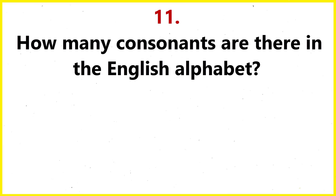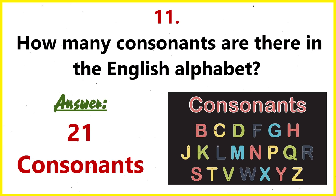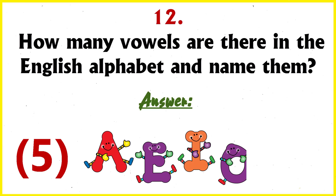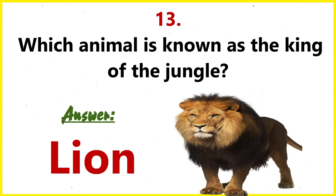How many consonants are there in the English alphabet? 21 consonants. How many vowels are there in the English alphabet and name them? Five vowels, namely A, E, I, O, U. Which animal is known as the king of the jungle? Lion.